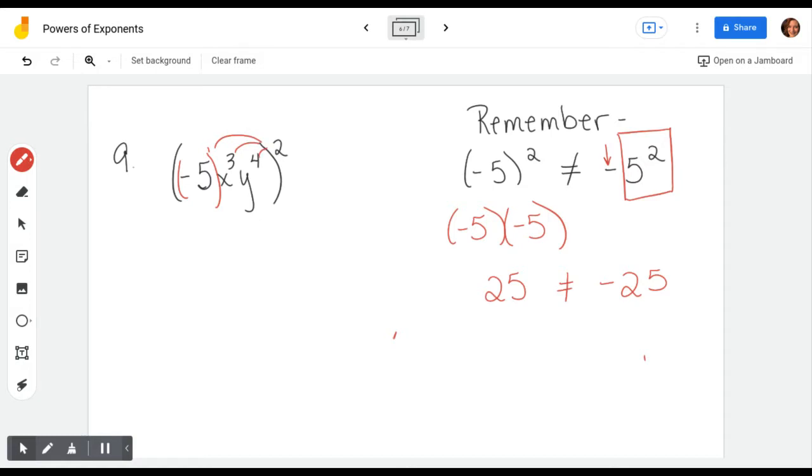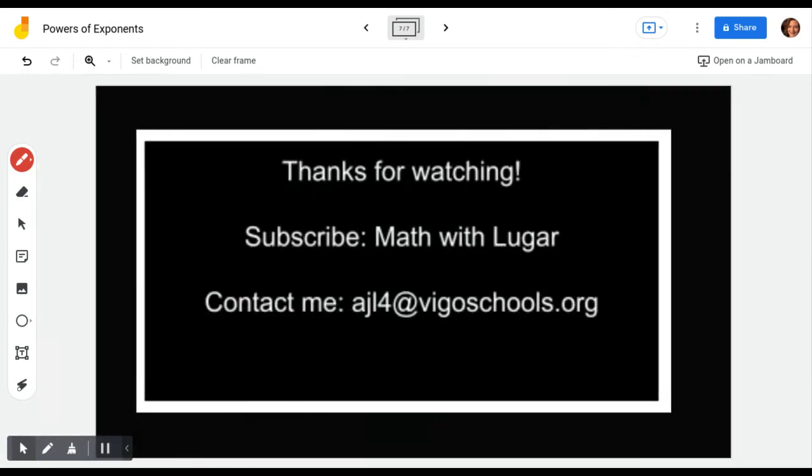Then take care of multiplying your powers, so that's going to become negative 5 to the second, x to the sixth, y to the eighth. And if you need to go ahead and evaluate or simplify further, negative 5 to the second is 25, and then x to the sixth, y to the eighth.